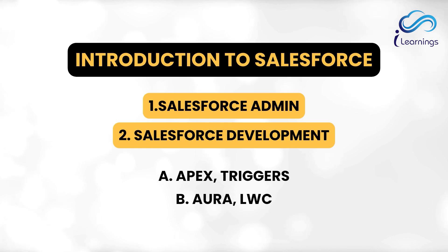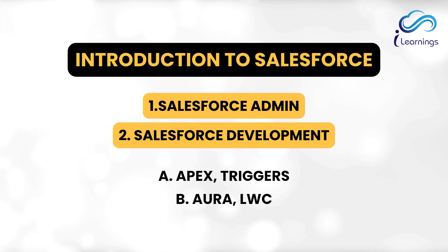We also have Aura and LWC — Lightning Web Components. What is the difference between Apex and LWC? For complex business scenarios, for example roll-up summaries: we can only create 25 roll-up summaries per parent object as per Salesforce's limitation. If you need more, you can create additional ones using Apex — it will process in the background and display the value in your UI.